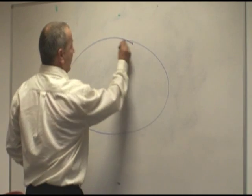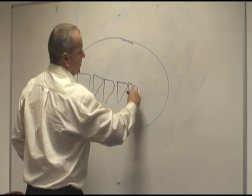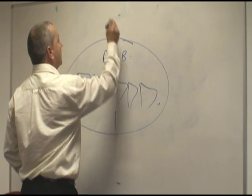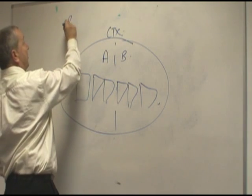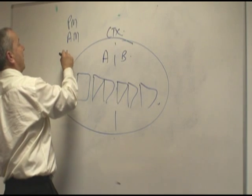So if this is my Citrix farm here and I have six servers and they split into two streams of applications and I have my three modules: Performance Manager, Application Manager, and Environment Manager.